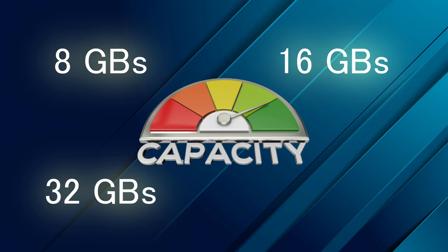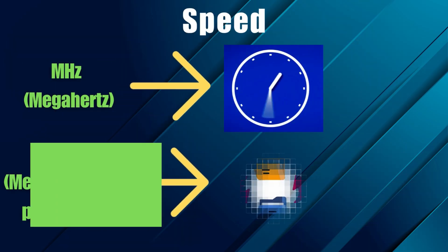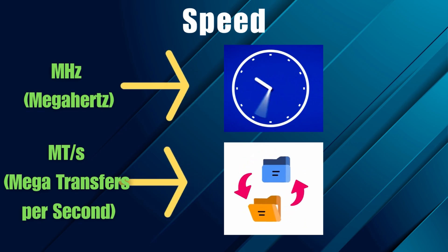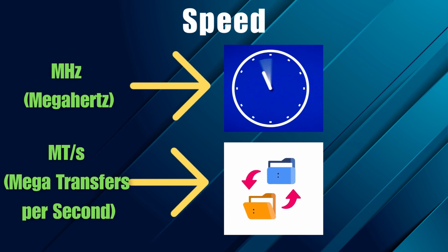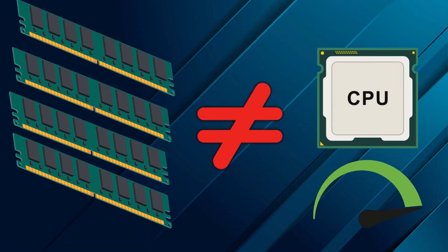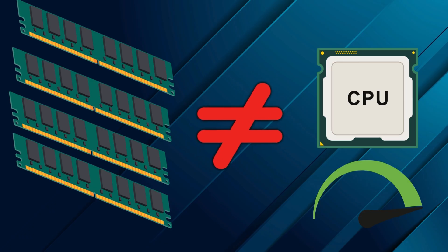32GB is the new standard for heavy content creators, 4K video editors, and serious multitaskers. 64GB or more is for professional 3D rendering or complex scientific computing. And then there's speed or frequency — like 3200 MHz or 5600 megatransfers — which affects how fast your CPU can access data. While faster RAM can help performance, especially in gaming, it's not magic. It's about headroom, not horsepower. More RAM doesn't make your CPU faster; it just lets it work at its full potential without waiting.